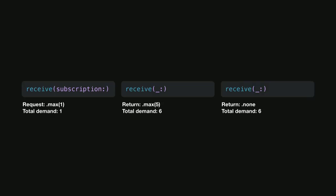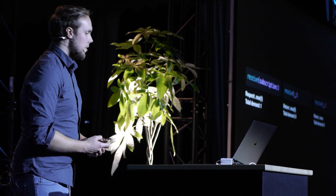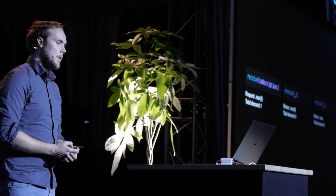When is returning demand of none useful? It's typically useful if you are doing some kind of asynchronous processing in your subscriber and you're fine with managing which events you process. If you receive an event and want to process it, you could return none from the receive method, and then after processing the value, manually request new values from the subscription. This is called backpressure management, and it helps you avoid backing up your subscriber's processing capabilities.